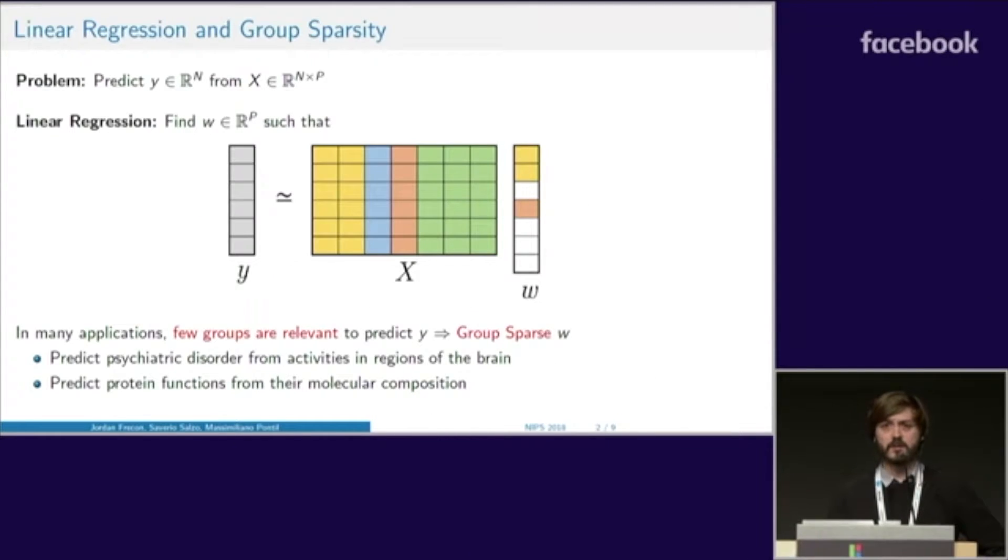We consider the case where we would like to predict the vector Y from some matrix X. To do so, we look for a linear model where we find a vector W such that Y equals X times W. However, in many cases, only some part of X might be relevant to predict Y. This is why you should prefer a solution W which is group sparse, and one efficient way to do so is to resort to the group lasso problem.